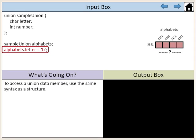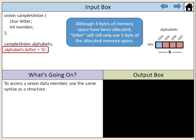To access a union data member, use the same syntax as a structure. Here we've assigned the value B to the data member letter. Although four bytes of memory space have been allocated, letter will still only use one byte of the allocated memory space.